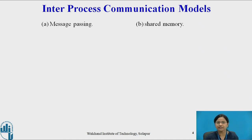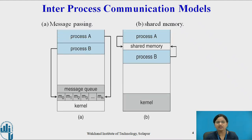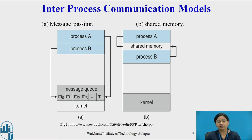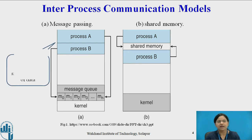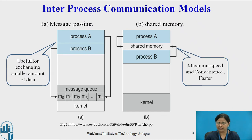There are two fundamental models of inter-process communication: message passing system and shared memory. In a message passing system, processes can communicate with each other by exchanging messages. In shared memory, processes communicate by using a shared region — a part of memory shared between the processes that wish to communicate. Message passing is useful for exchanging smaller amounts of data, while shared memory is used to exchange larger amounts of information. Shared memory gives maximum speed and convenience and is faster than message passing, because message passing is implemented using system calls, making it quite time consuming.